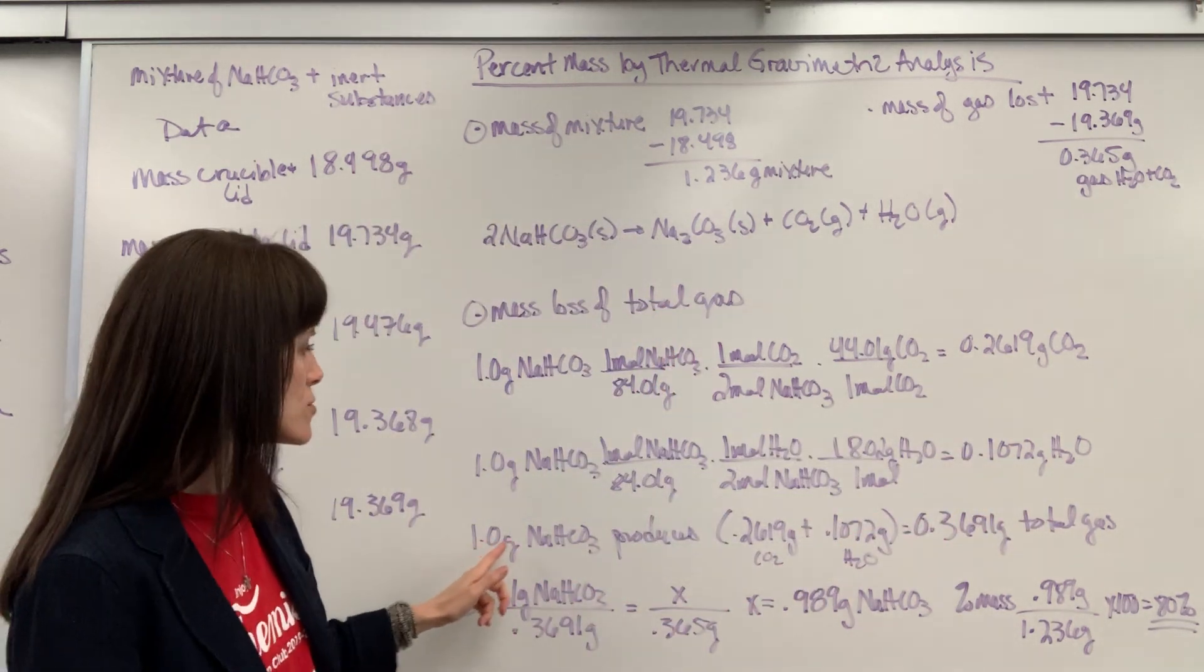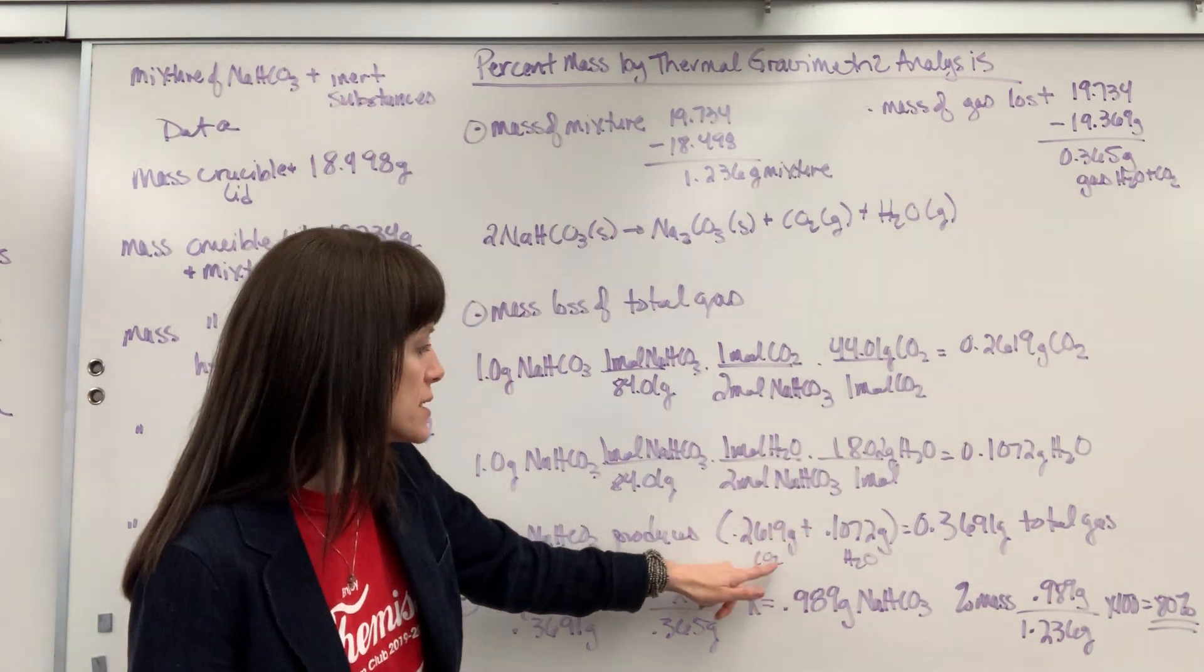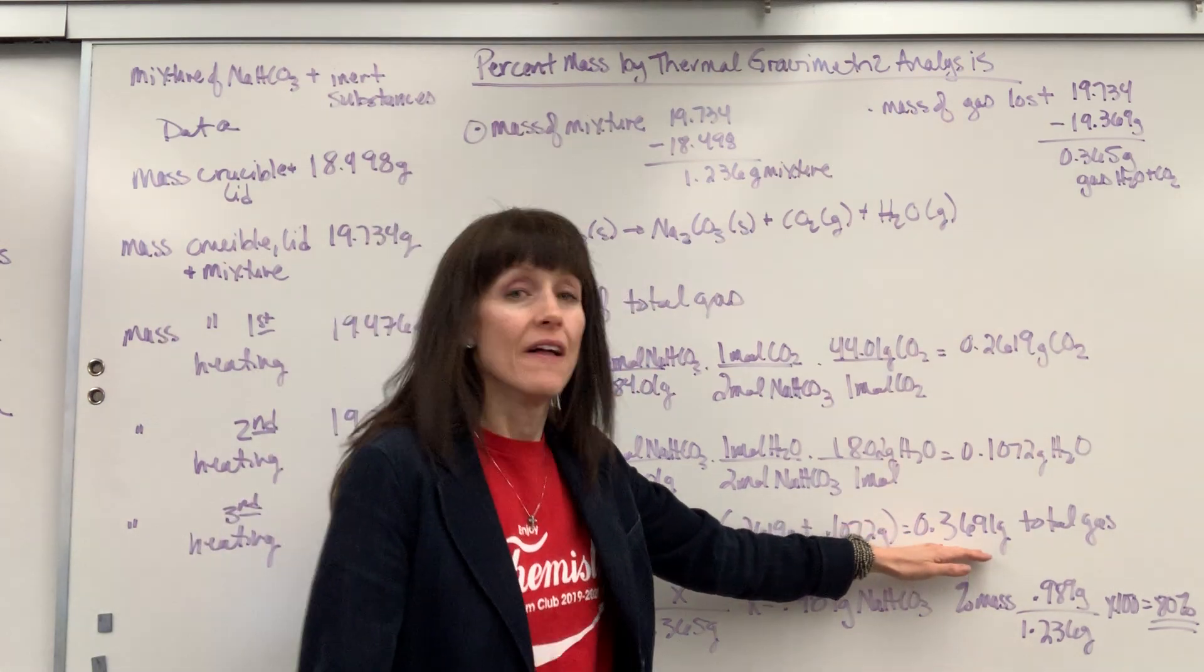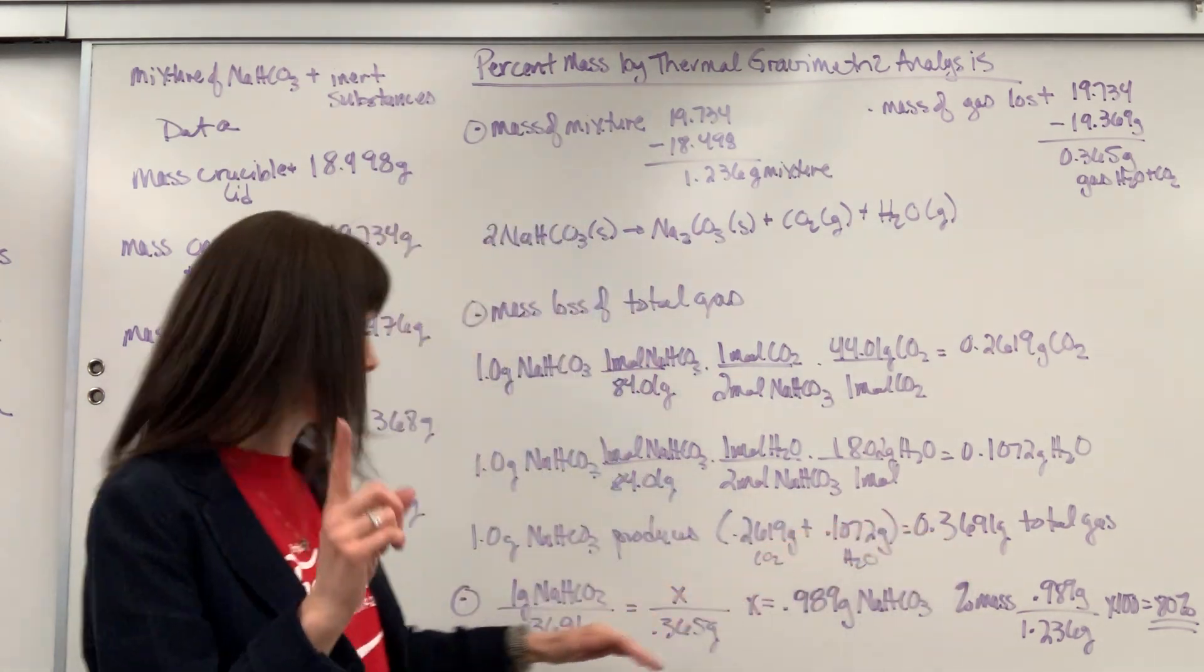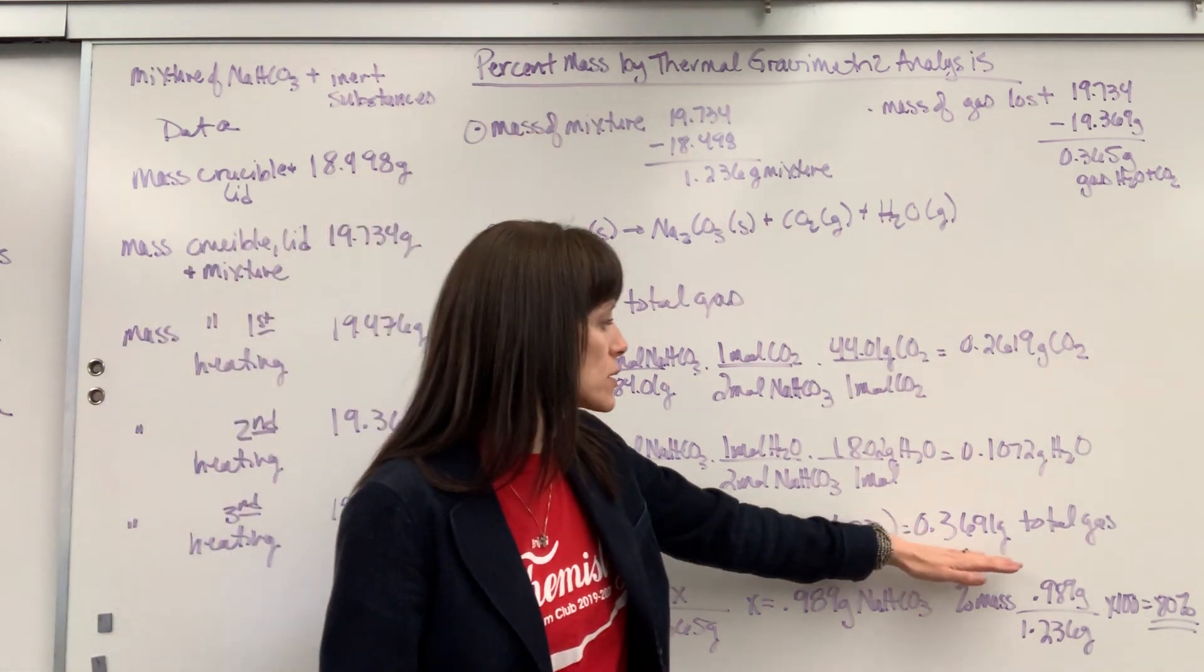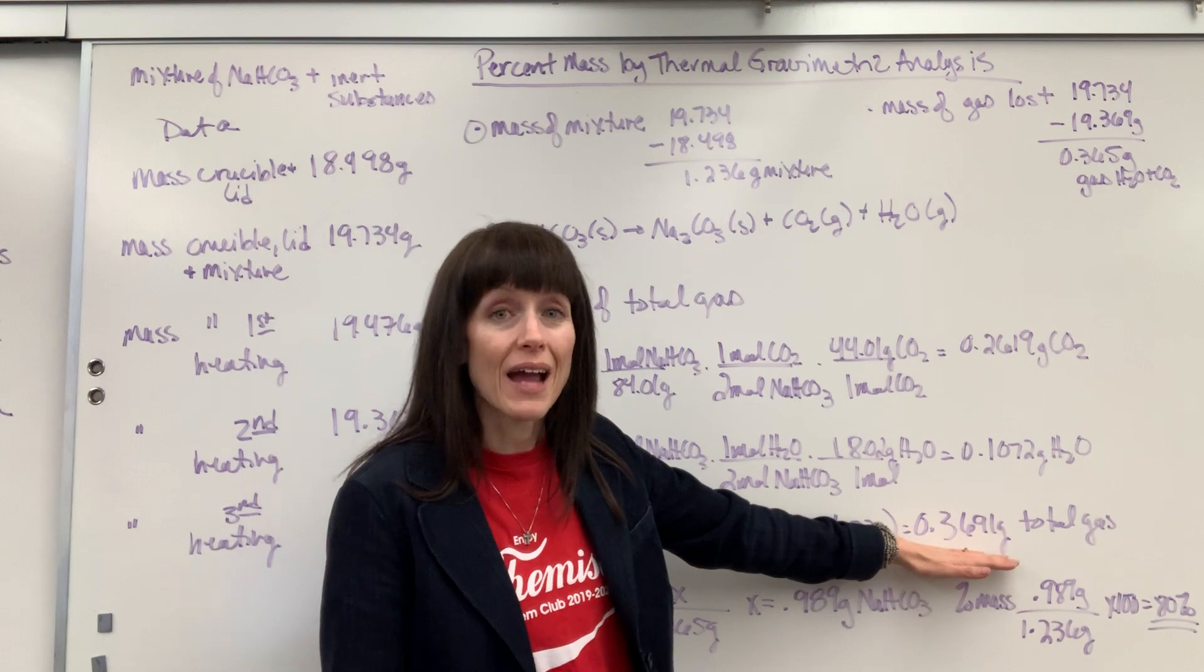Now if I add those two masses together, the 0.2196 grams of CO2, the 0.1072 grams of water, add that together, that gives me for 1 gram of sodium bicarbonate, it is going to lose 0.3691 grams of gas. We have a ratio.